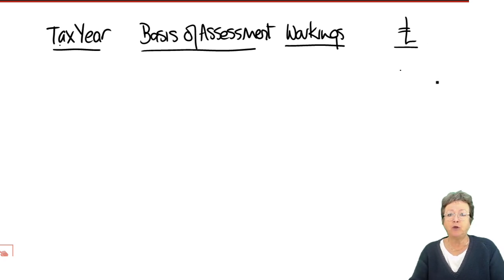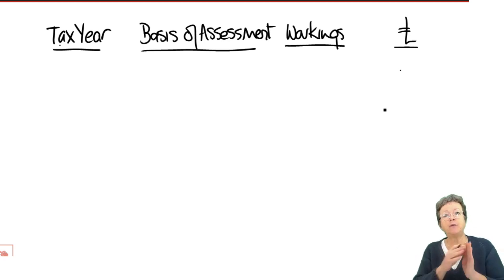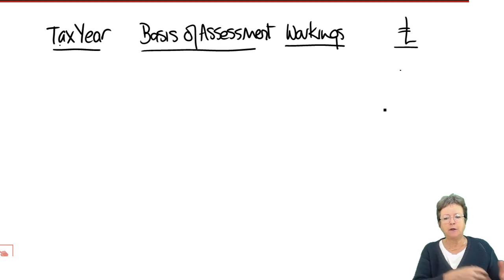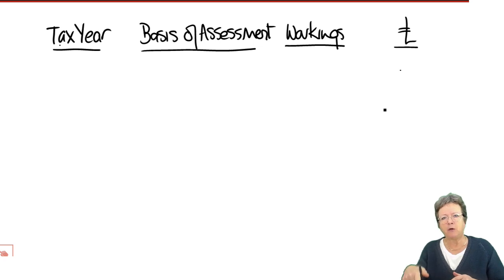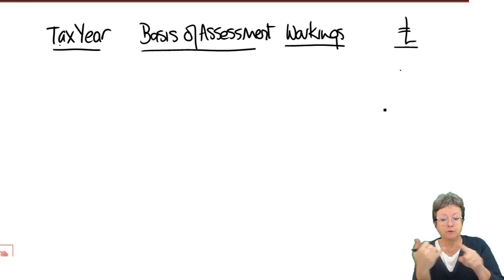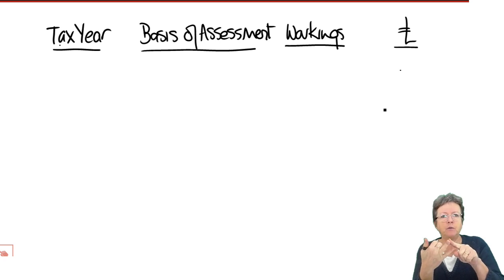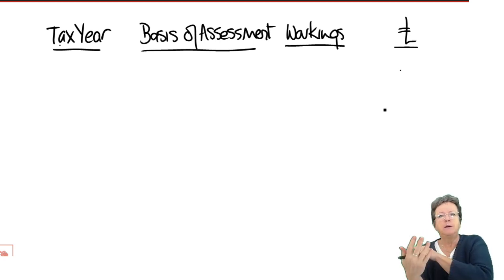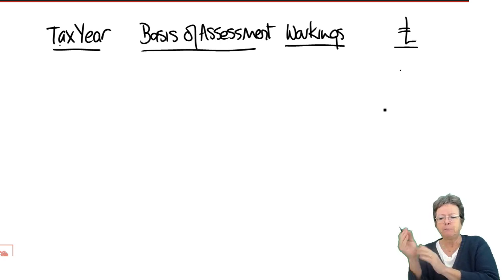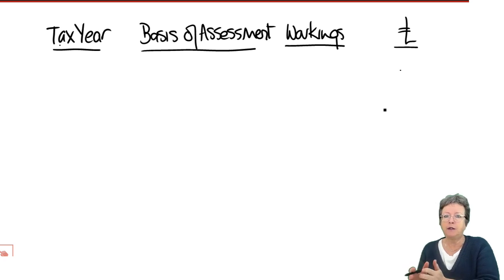As with all of these tax exams, you get marks for showing the process. Everything that you put through your calculator needs to be on your answer page. There are rarely marks for the answers — the marks come from the process. Do you know the rule? Write the rule down. Have you applied the rule to the question? Can you do the workings and show all the process? The answer is at the end. Yes, the answer is very important, but that's not what you're going to get marks for. The idea is to get as many marks as possible.